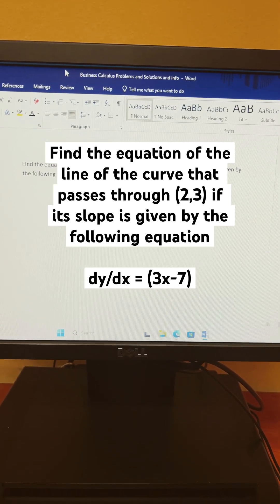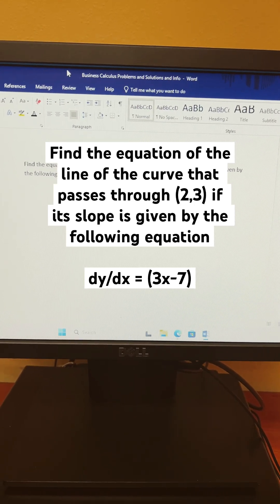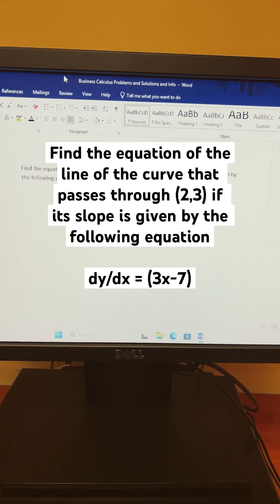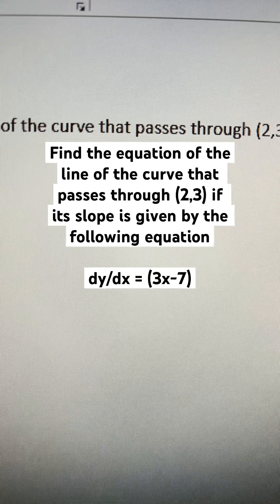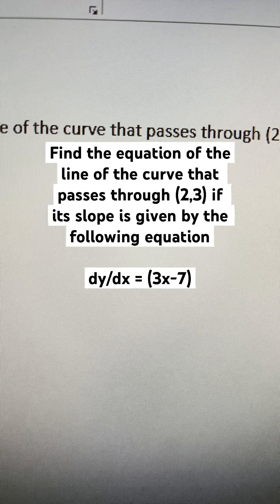Find the equation of the line of the curve that passes through coordinate (2,3) if its slope is given by the following equation. We got dy/dx equals 3x minus 7.